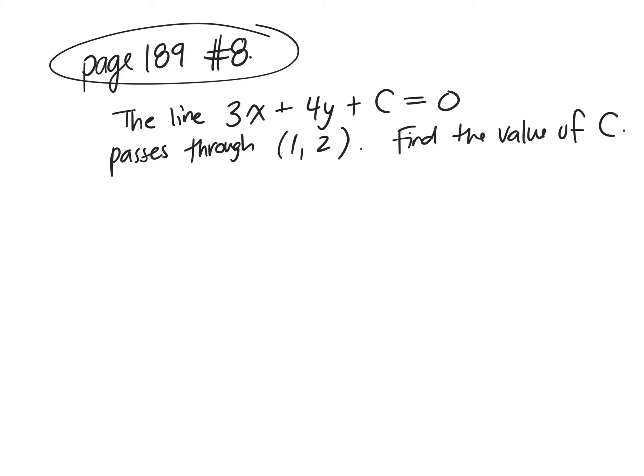Okay, so you're given the equation of the line in standard form. Remember, standard form is AX plus BY plus C equals 0. And we have to figure out the value of C, but we can't solve this if we don't know the value for the other variables. But then we're told that this line passes through this point, 1, 2.